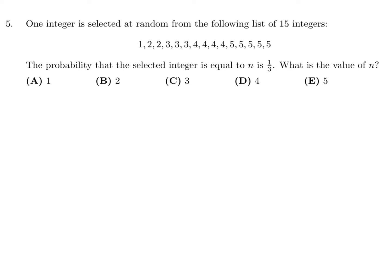One integer selected at random from the following list of 15 integers. The probability that the selected integer is equal to n is 1 over 3. What is the value of n? Okay. So probability is always our specific condition over the total. Now the total in this case is 15. So there we go.